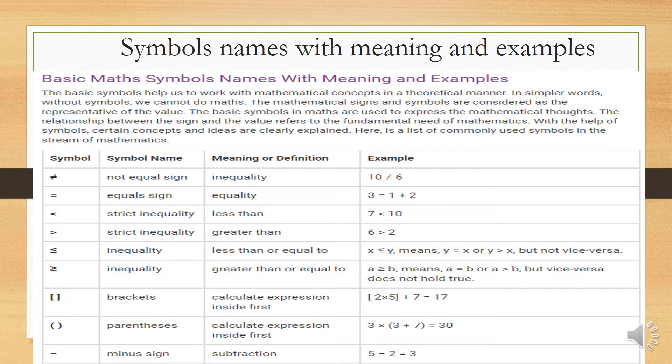Another inequality symbol is greater than or equal to. For example: a is greater than or equal to b means that a equals b, or a is greater than b, but not vice versa.